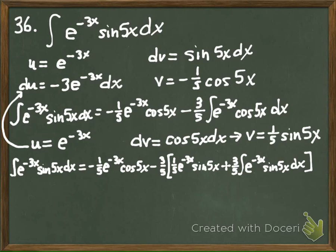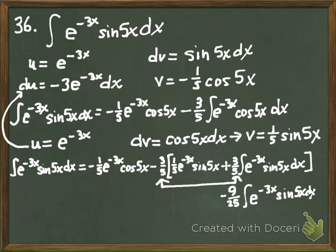Now notice on this last term, you've got this negative 3 fifths here and a 3 fifths here, right? So this last term, I have negative 3 fifths times positive 3 fifths, so I'm going to get a negative 9 over 25, right? And that will be e to the negative 3x sine 5x dx. That's what my last term ends up being. Does that make sense? I'm going to take this term right here and I'm going to combine it with this term right here, because now they are like terms. Now they both have the same integral.